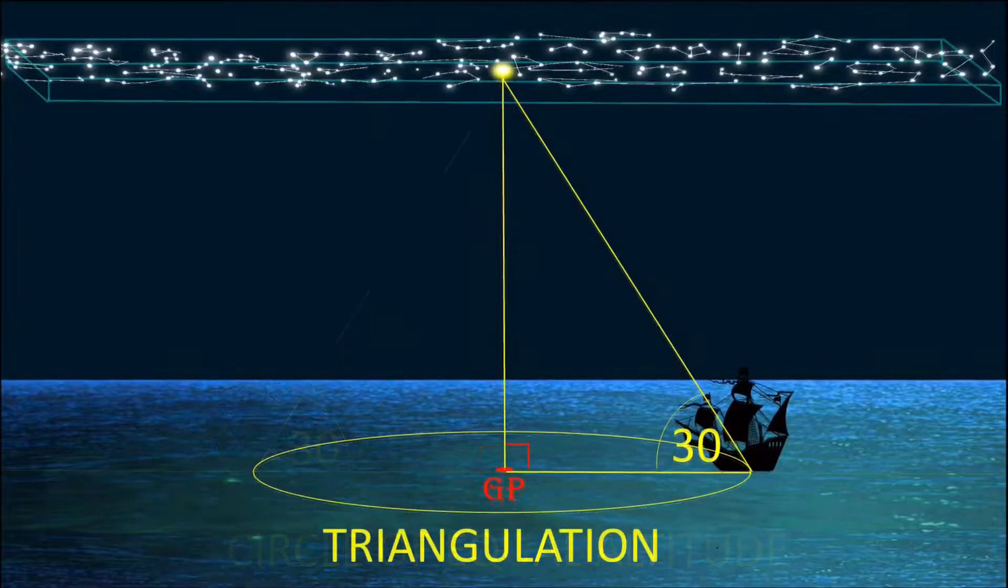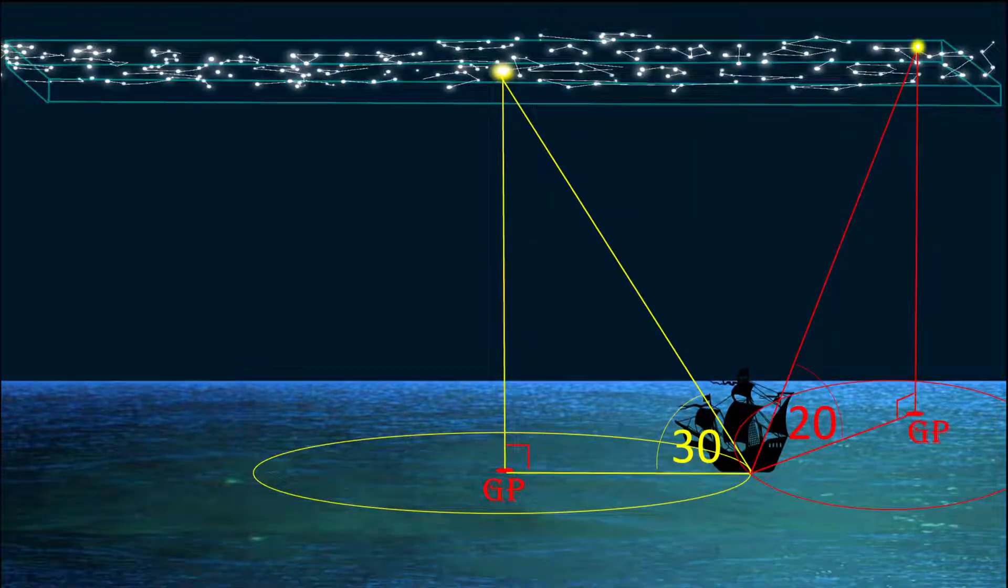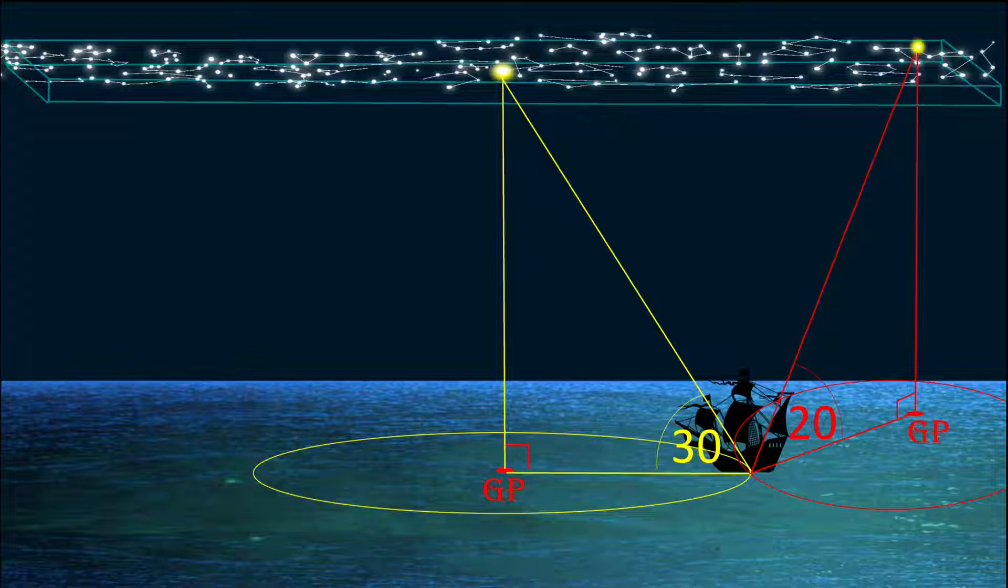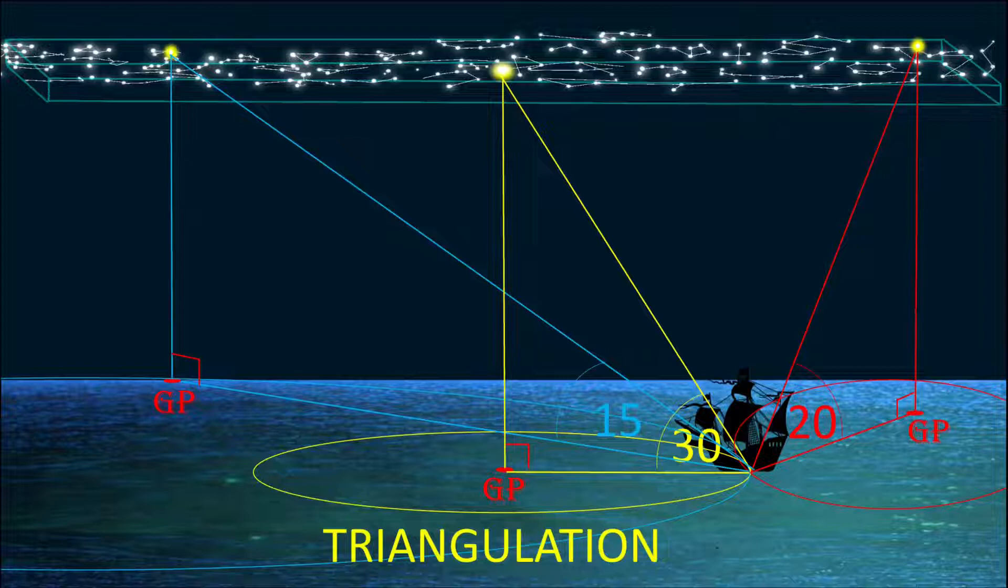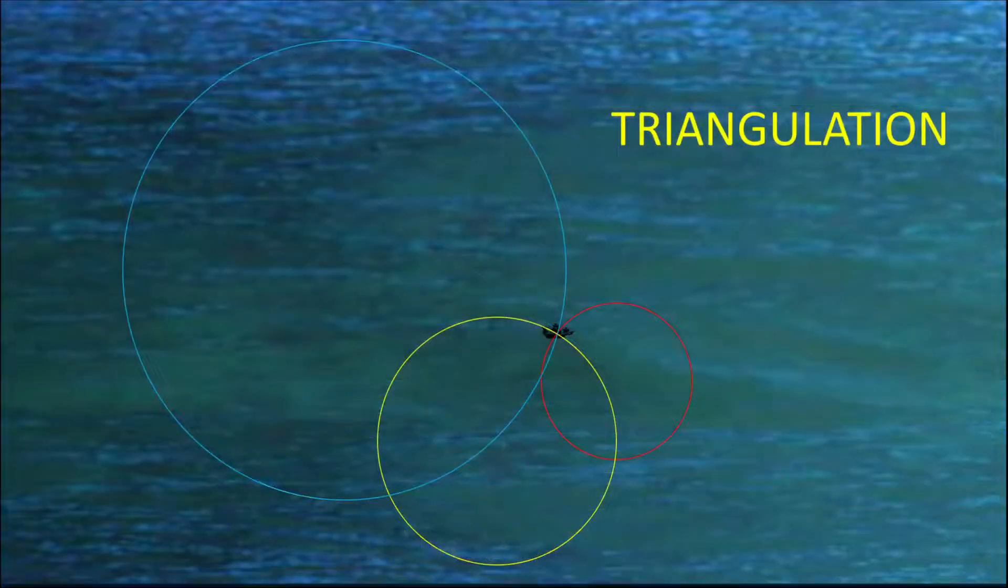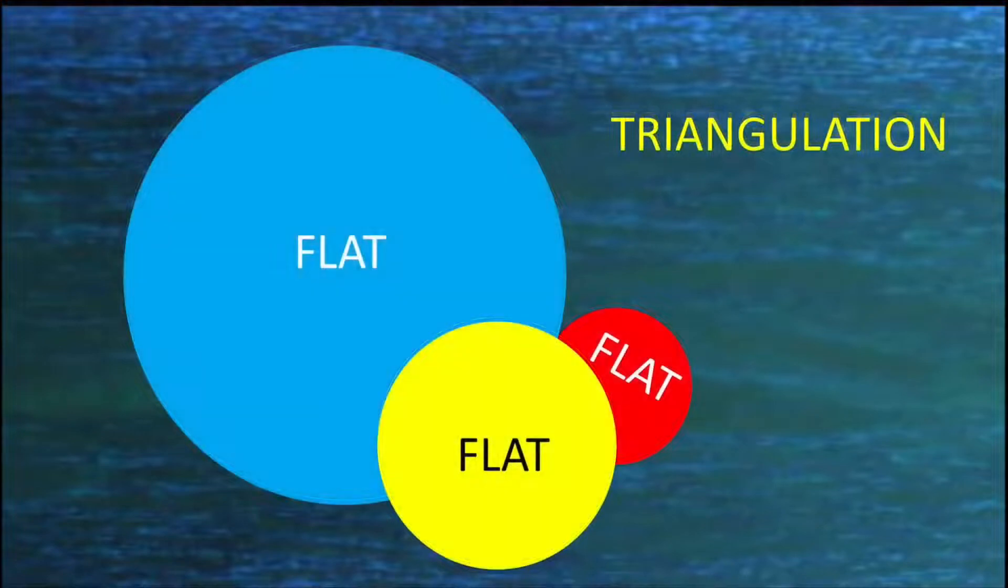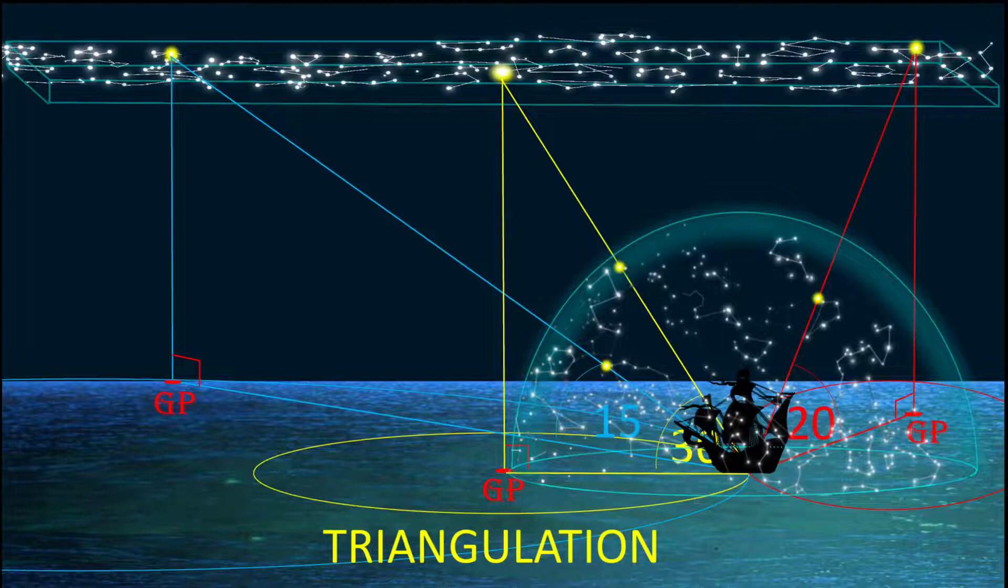By doing this once with a sextant, you know you are somewhere on that circle of equal altitude. To triangulate your actual position, you need to repeat these steps with other stars. Your position is where all these areas of equal altitude meet. This is how celestial navigation works and has always worked on our flat level plane using the celestial flat level plane.